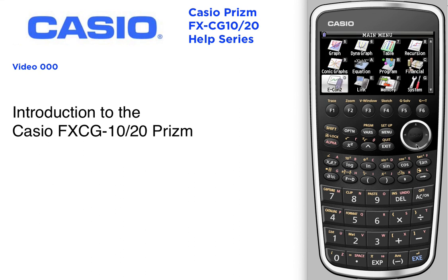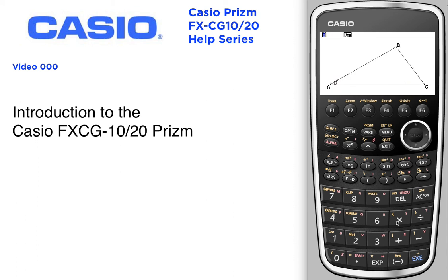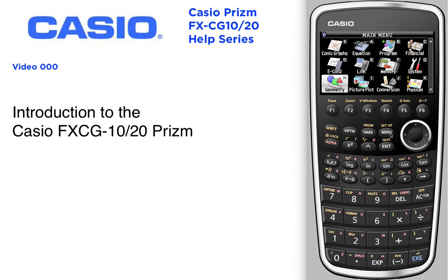Going back into the menu, we also have geometry, including powerful things like animations. Go ahead and edit that animation and let it go — as it traces point D along AB, anything that would have been attached to D would also animate dynamically.